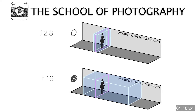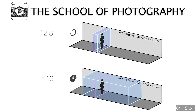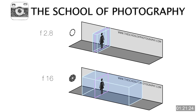If we go to f/16, which is a smaller aperture, that gives you a longer depth of field. As you can see, the focus point is still the same, but the distance around that focus point that is sharp has changed.